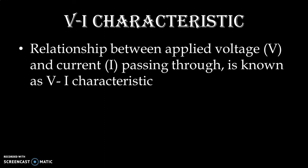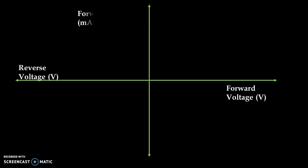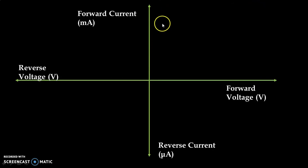Now we are interested in understanding the VI characteristic of the PN Junction Diode. The relationship between applied voltage V and current I passing through is known as the VI characteristic. On the X axis we apply voltage and on the Y axis we have current. In the first quadrant we apply forward voltage and have forward current. In the third quadrant we have reverse voltage application and reverse current. So the VI characteristic appears in both the first and third quadrants.